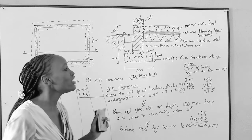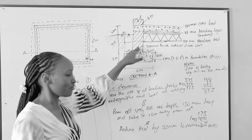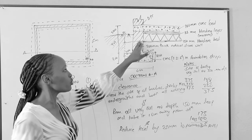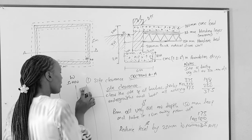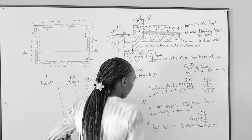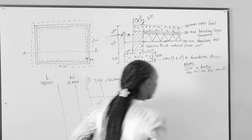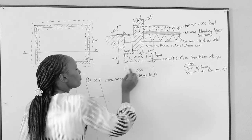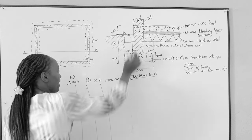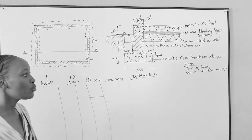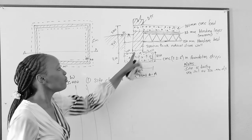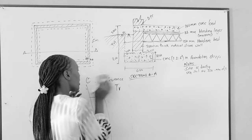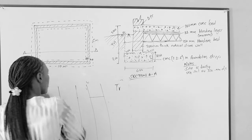Once the whole site is at formation level, we now need to excavate the trench to create space for the concrete and the wall. After clearing the site, removing the vegetable soil, and reducing the level, the next step is trench excavation.